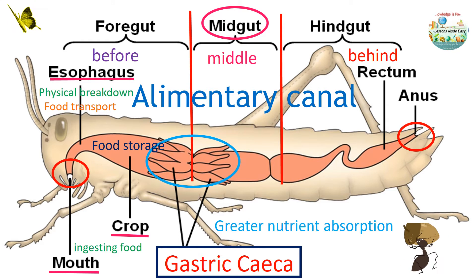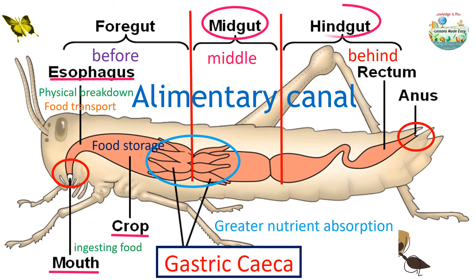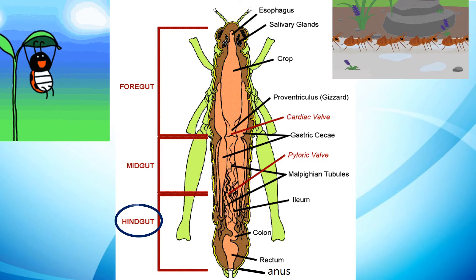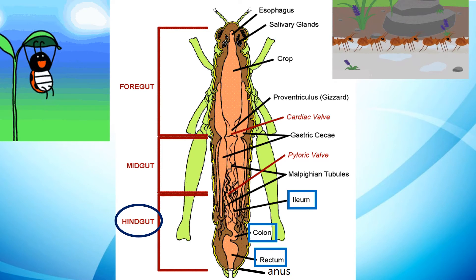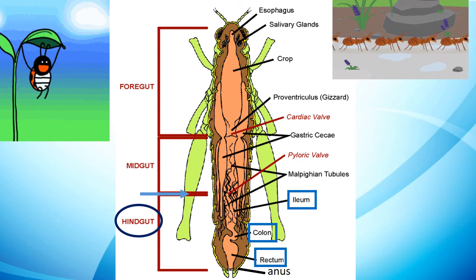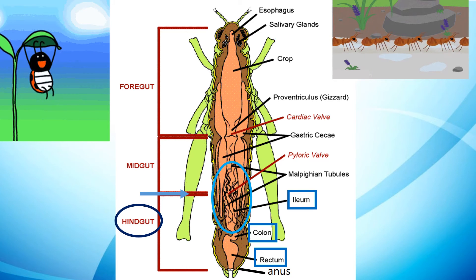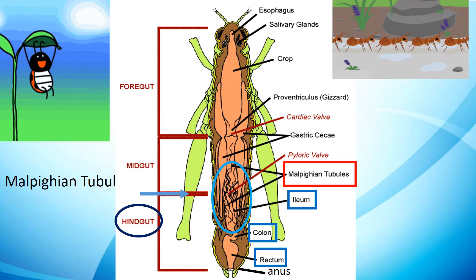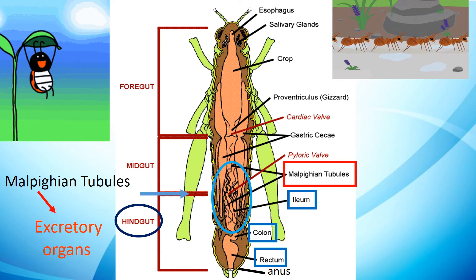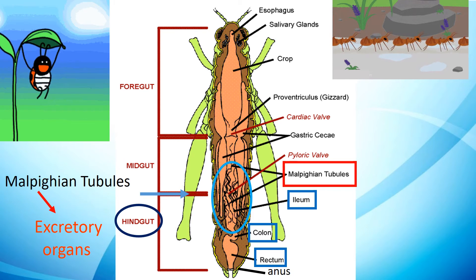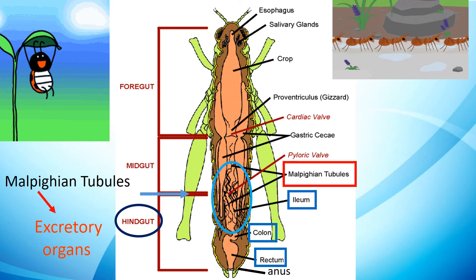Undigested food particles then pass into the third region called the hindgut. The hindgut consists of the ileum, colon, and rectum. Near the junction of the midgut and the hindgut are long, thin structures called Malpighian tubules, which are the insect's excretory organs that collect excess water and waste from the food.